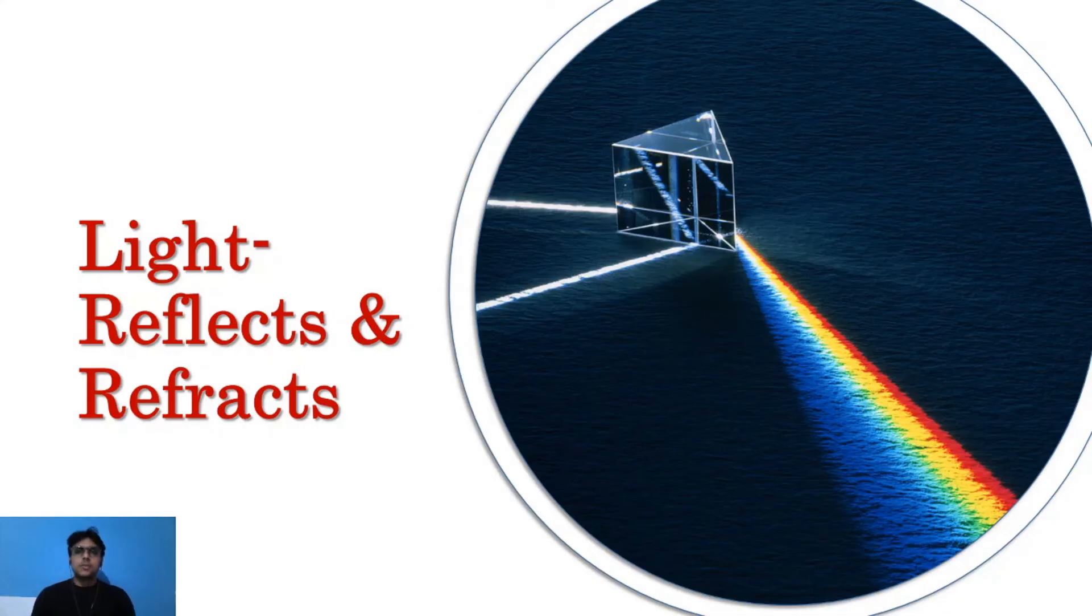Last time we saw the light chapter: what makes things visible, light travels in a straight line, reflection and two types - specular reflection and diffuse reflection. Now we will add to this reflection part and introduce a new topic.